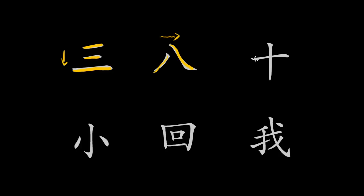The next rule that applies to writing Chinese characters is that horizontal strokes have priority over vertical strokes. So what you have to do is first write the horizontal stroke and then the vertical stroke, no matter if they are crossing, and no matter where in the character they are found.